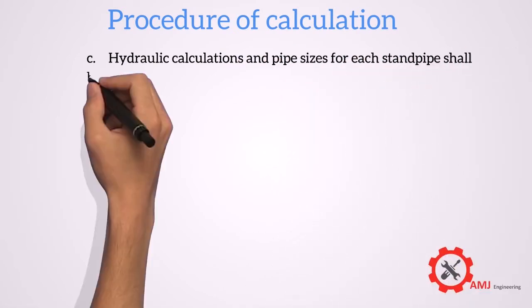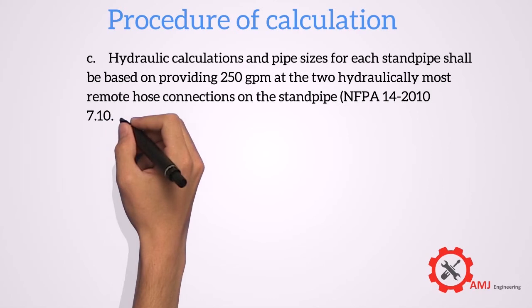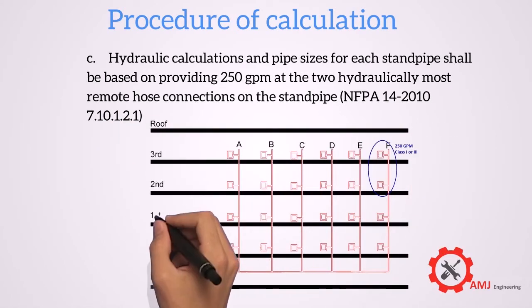Hydraulic calculations and pipe sizes for each standpipe shall be based on providing 250 GPM at the two hydraulically most remote hose connections on the standpipe, as per NFPA recommendation.